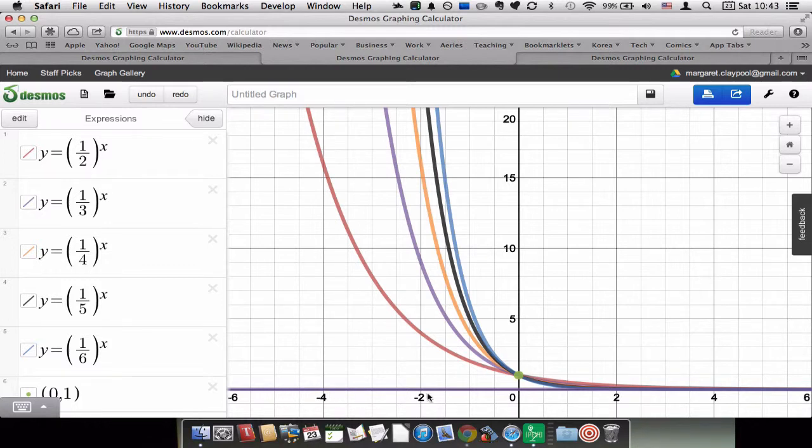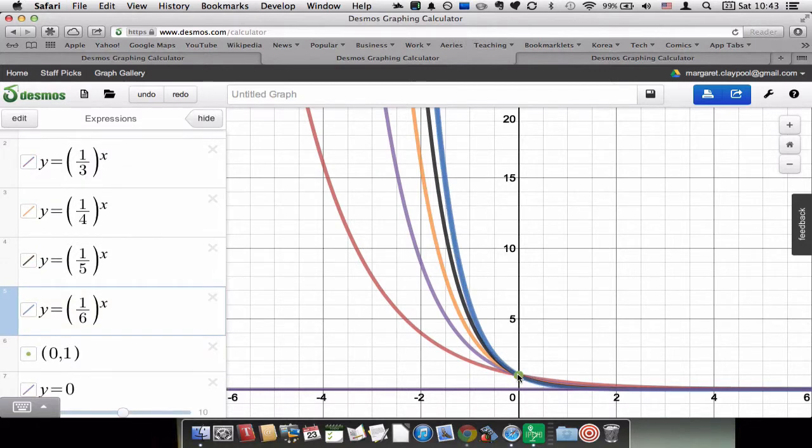These functions have a horizontal asymptote at y = 0. They also go through the point (0,1), and they look exactly the same as exponential functions with an integer base, except they're flipped across the y-axis. So for example,